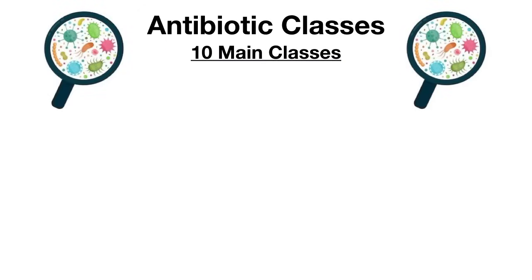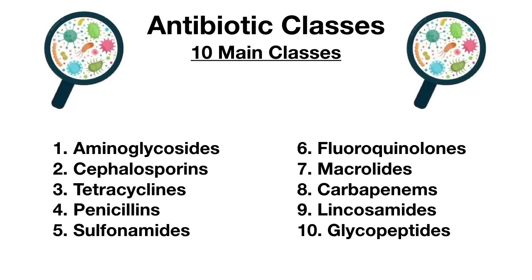There are 10 main classes of antibiotics to know. They include the aminoglycosides, cephalosporins, tetracyclines, penicillins, sulfonamides, fluoroquinolones, macrolides, carbapenems, lincosamides, and glycopeptides.